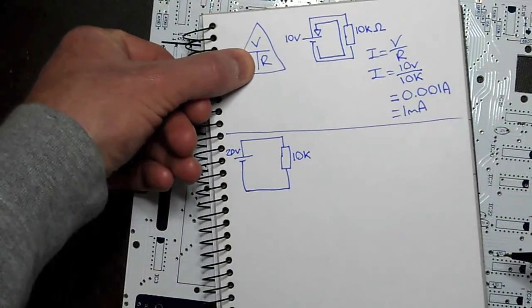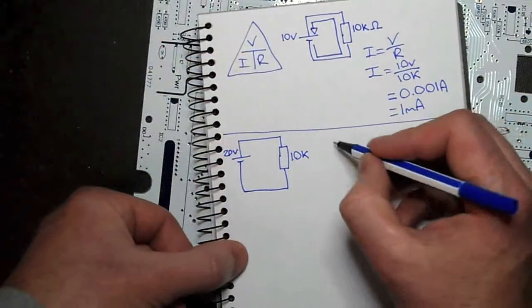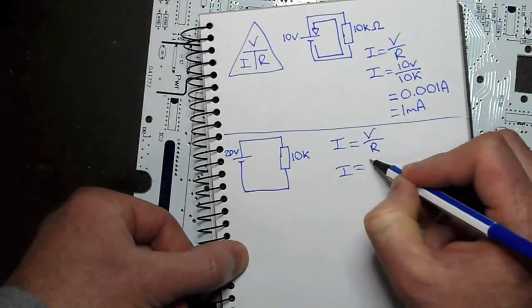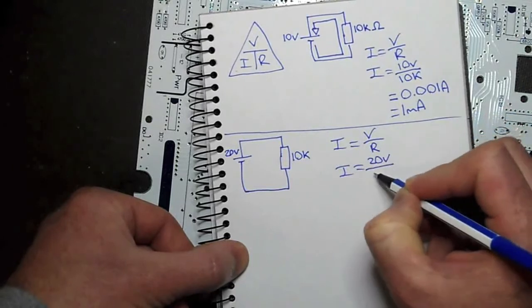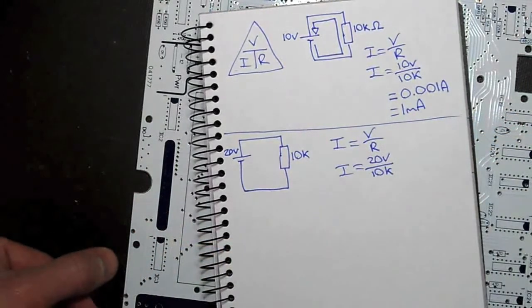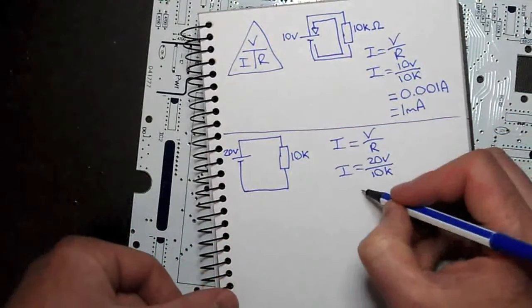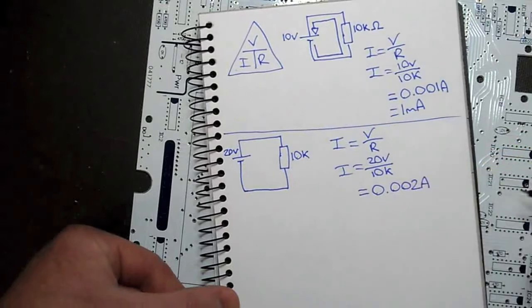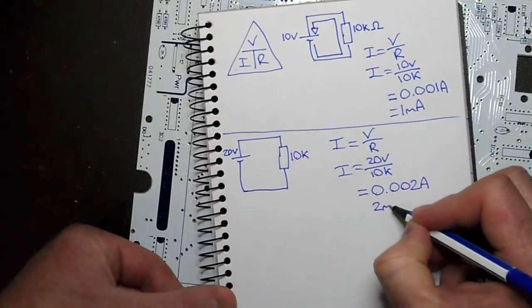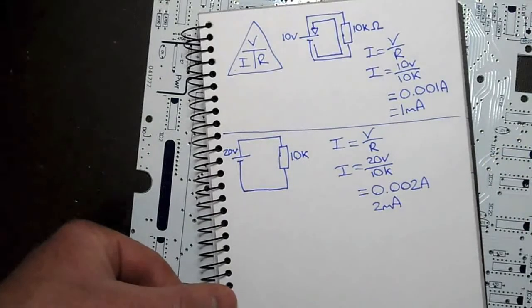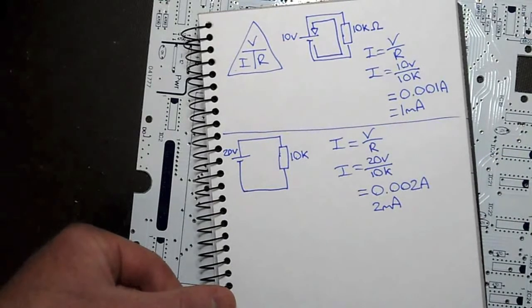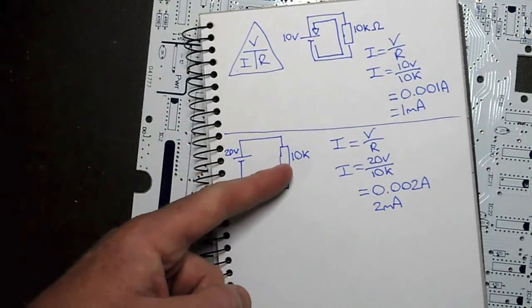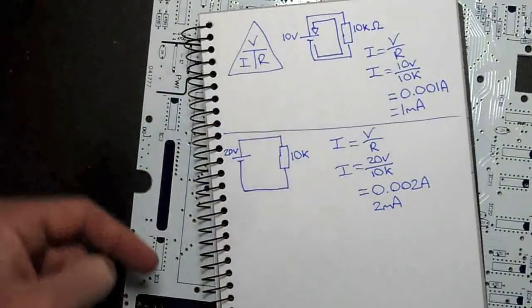Current is voltage divided by resistance. Therefore, current equals now 20 volts divided by 10K or 10,000 ohms. Punch that into your calculator and you will get 0.002 amps. Again, we would write it as 2 milliamps. Well, that makes sense. We've increased the voltage, kept the resistance the same, and we've now got more current flowing in our circuit.